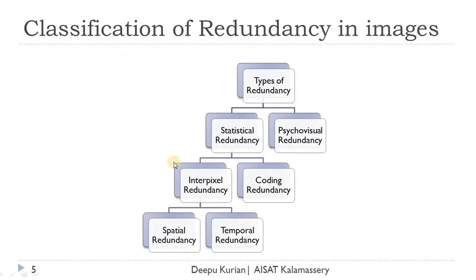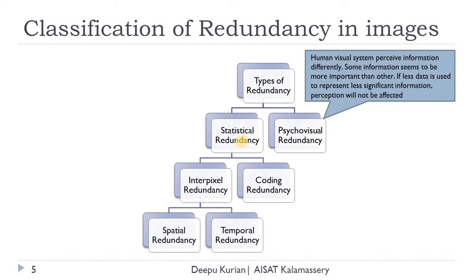We will see the various types of redundancy in images. They can primarily be classified into two: statistical redundancy and psycho-visual redundancy. Psycho-visual redundancy employs the property of the human visual system. Human visual perception will be different for different images or different parts of an image — some information seems more important than others. By employing psycho-visual redundancy, if less data is used to represent less significant information, we can achieve compression. That is the technique used for compression methods which use psycho-visual redundancy.